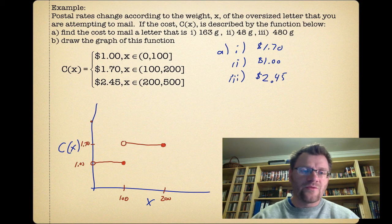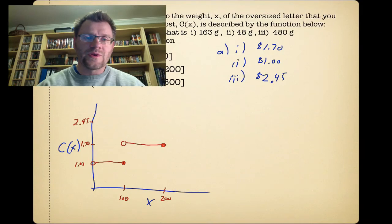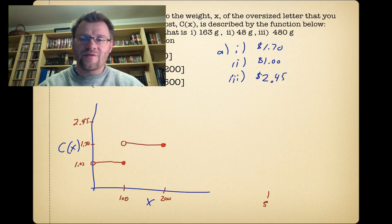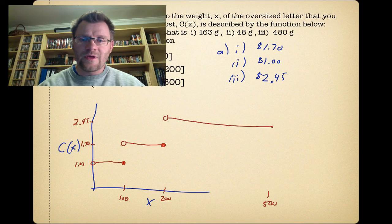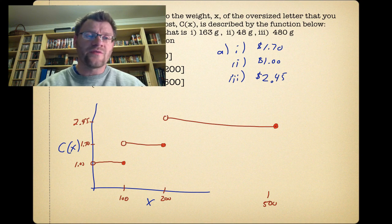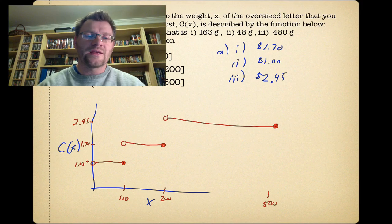And then it's going to be $2.45, somewhere up here, if you're going between 200 and 500. So 500 would be somewhere over there, if we're trying to keep the same scale. And it'll look something like that. So this is what we call a step function. So it's a piecewise function, because there's different pieces, but it's also considered a step function, because there are definite little steps that take place in this real-life situation.